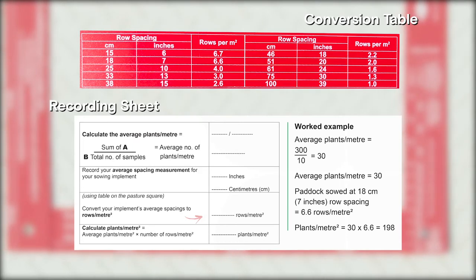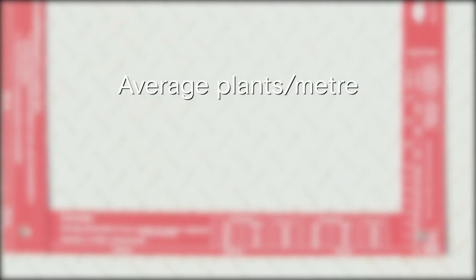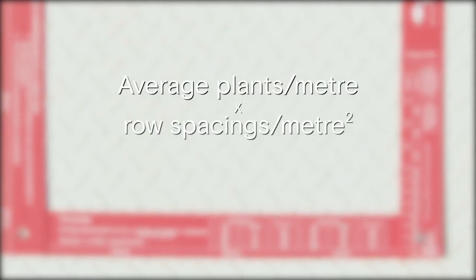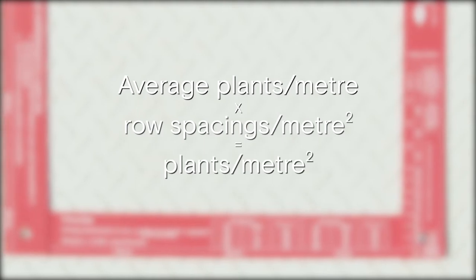Record this figure on the recording sheet. We now use those combined figures of your average plants per metre, and multiply by the number of rows per metre squared to calculate the plants per metre squared within your sown row crop.